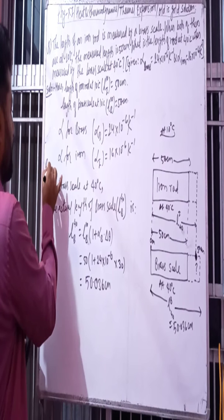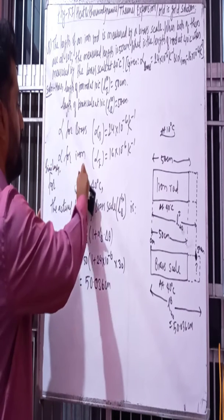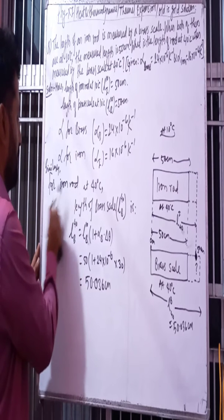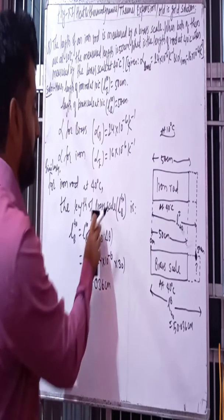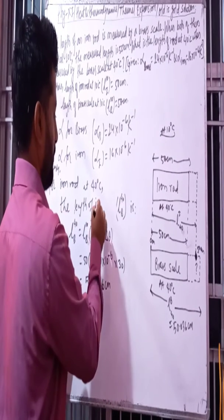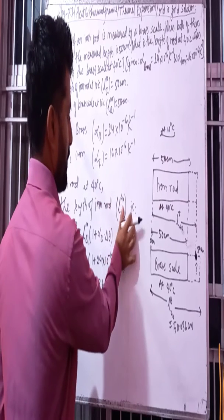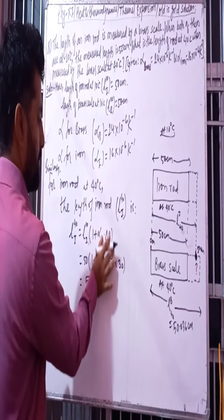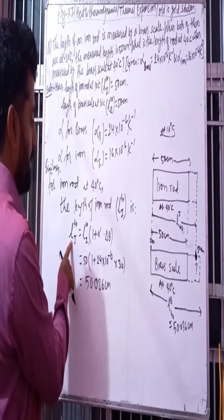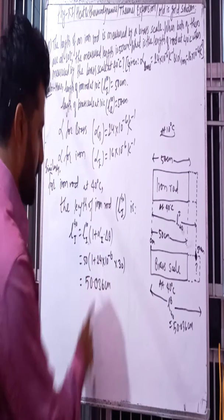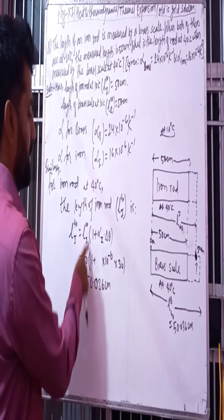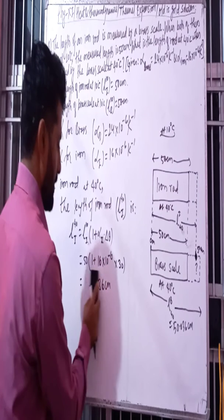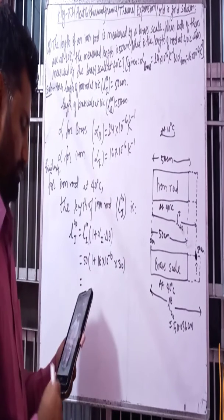Similarly, for the iron rod at 40 degrees centigrade, the length of the iron rod L40 iron equals L10 iron times 1 plus alpha iron into delta temperature.